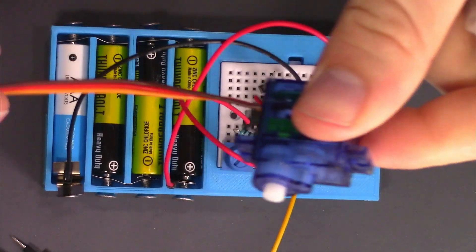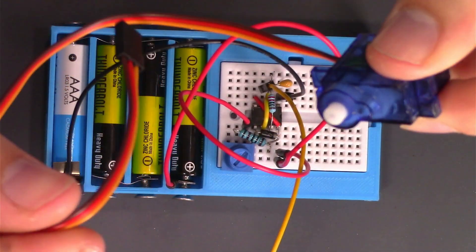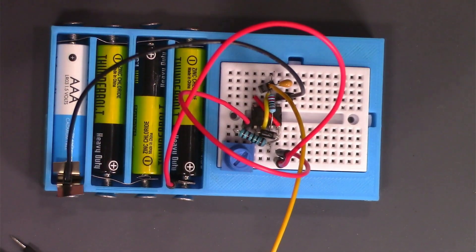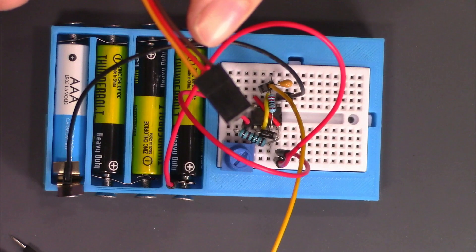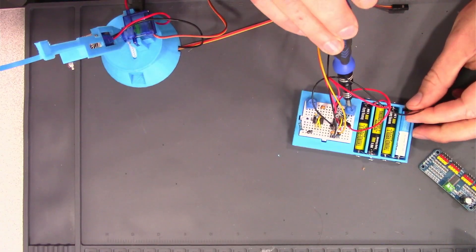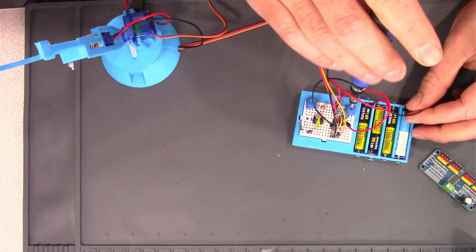Here's a nine gram servo. The brown wire is for ground, the red wire is for power, and the yellow or orange wire is for signal. Now that I have the servo hooked up, I'll show you what it looks like attached to my robot.